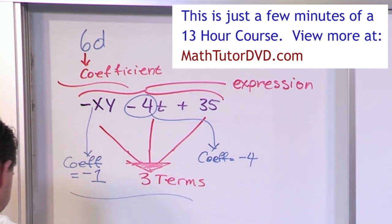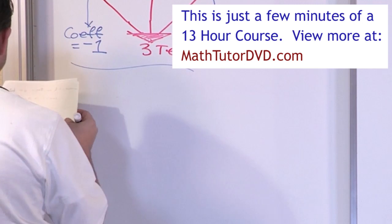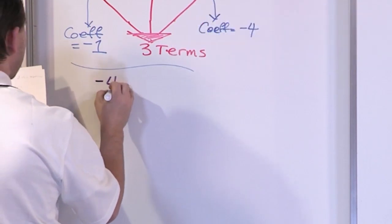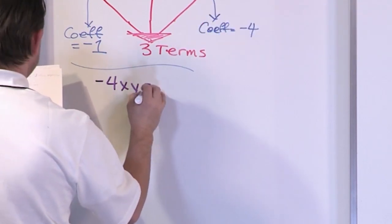So let's give you another little example here. Kind of drill this in a little bit more. Let's say you have something like negative four times x times y times z plus seven times x.